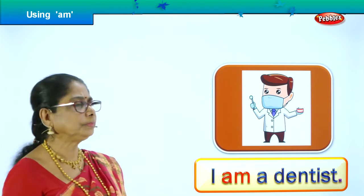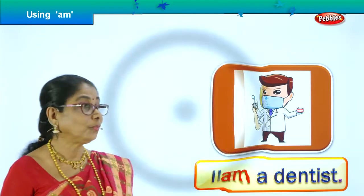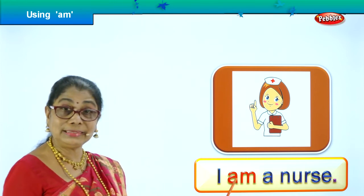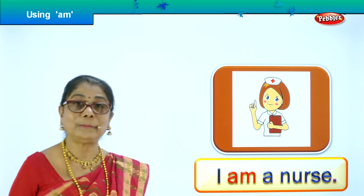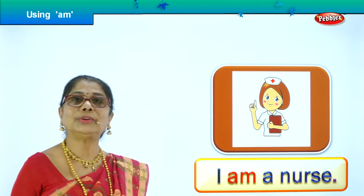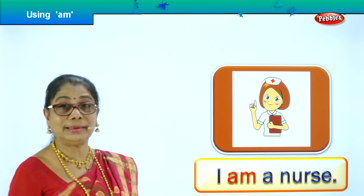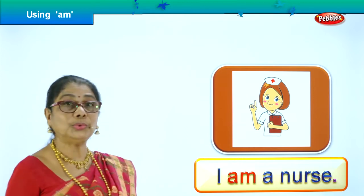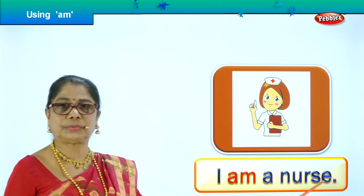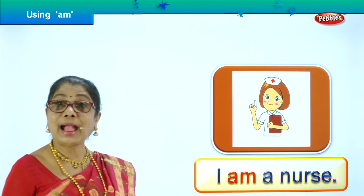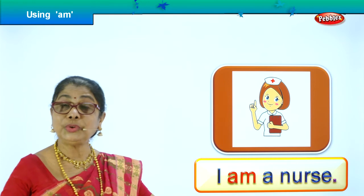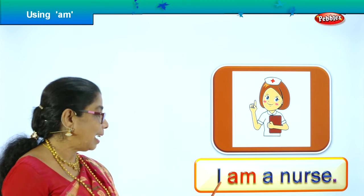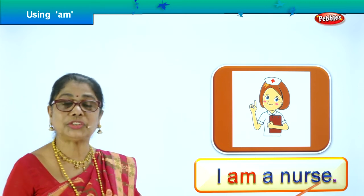Now let's go to a new picture. You are learning to read sentences with 'I am' in them. Who is this? You go to the clinic, you go to the hospital — you will find her with a cap on her head. You ask her 'Ma'am, who are you?' She will say: 'I am a nurse, I am here to help you, I am here to assist the doctor.' 'I am a nurse.'